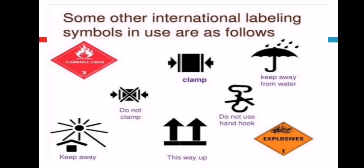These are the symbols I was talking about that we use in packaging. If it's a flammable product that can catch fire, it should be kept away from fire, so there's a red symbol. Clamp symbol, keep away from water with umbrella symbol. If there's a particular direction for keeping the product, this way up symbol is used. If you need to keep it away from sunlight, this symbol is shown. These are various kinds of labeling instructions which need to be taken care of while doing the packaging of the product.